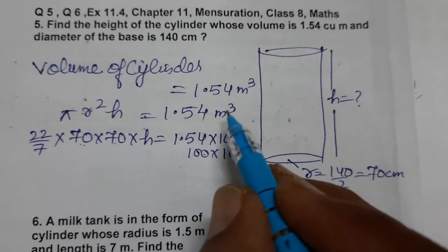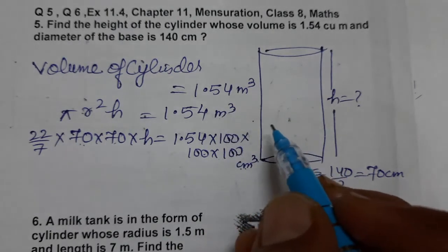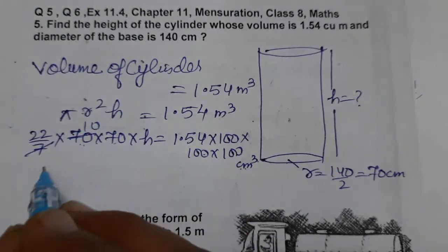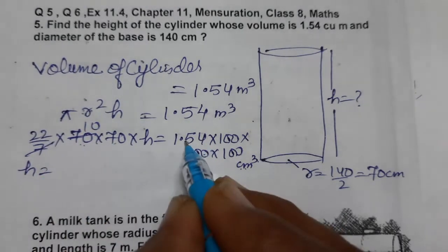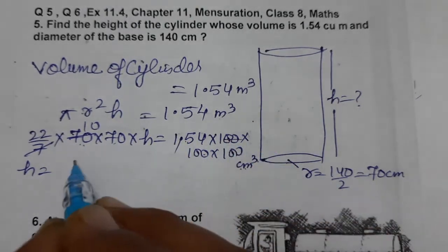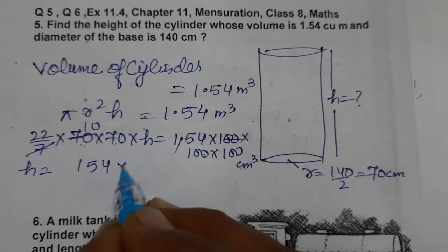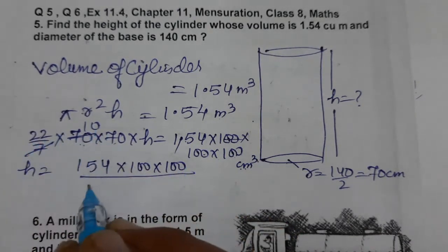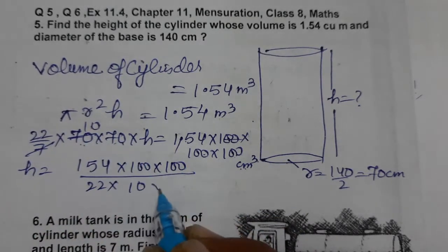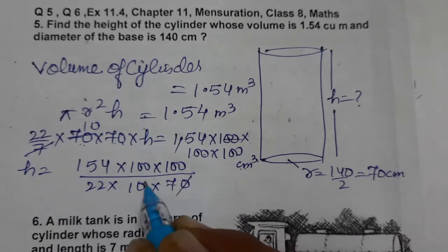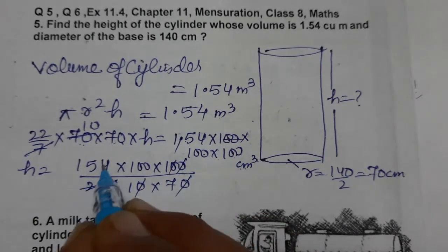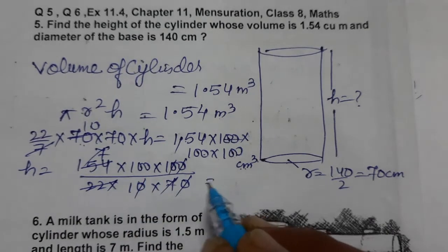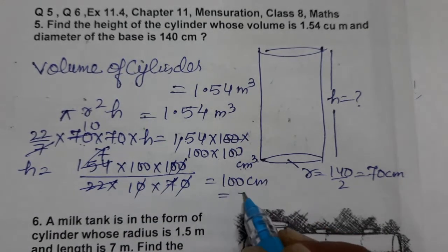Meter cube means meter × meter × meter — three times 100. Now we can solve easily: 7 and 7 cancel, 1.54 with two zeros cancel, leaving 154, and we have 100 × 100 remaining. After dividing by 22, 70, and simplifying — 7 and 7 cancel, 154 simplifies — what remains is 100 centimeter. 100 centimeter means 1 meter. So the height is 1 meter.